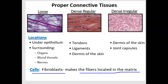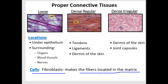In loose connective tissue, these dark circles are fibroblasts. In dense regular connective tissue, they're kind of flattened out but still dark purple stains. And in dense irregular, they're more circular. Now, where are these things located? In all types, you'll find them located underneath the surface of the skin, in the dermis of the skin, or under the epithelium.